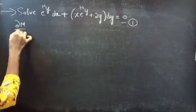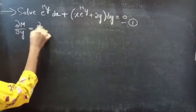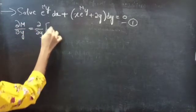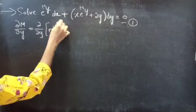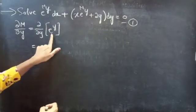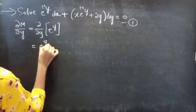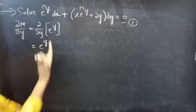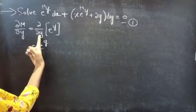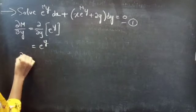Firstly, dou M by dou y equals to dou by dou y of M, where M equals to e power y. The derivative of e power y with respect to y is e power y.